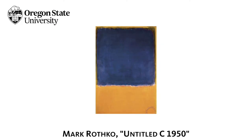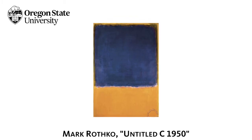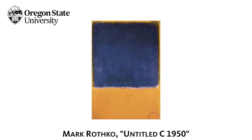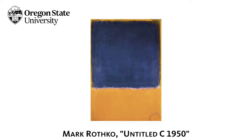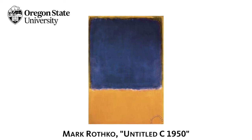Look at this painting by Mark Rothko. Check out the juxtaposition between the blue and the orange, but also the light blue and the dark blue, the orange and the tint of red under the blue, or the hint of yellow under the orange.